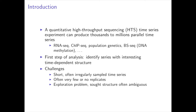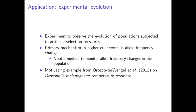As you might already know, high-throughput sequencing technologies have been very useful in measuring different biological quantities, and they can produce thousands to millions of parallel time series. We would like to identify time series with interesting time-dependent structure. However, this analysis has several challenges since time series are often short and irregularly sampled, and there are only very few replicates available. Thanks to experimental evolution, we are able to observe the evolution of populations subjected to artificial selection pressures.